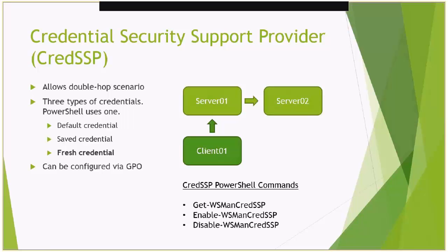The stipulation is that the script deployed to Server01 needs to access an authenticated network resource on Server02 — let's say a file server with a standard Windows share. If we didn't use CredSSP and just used a standard Kerberos connection, we'd successfully deploy the script from Client01 to Server01. But when that script ran on Server01 and tried to access the network resource on Server02 — the second hop — it would be an anonymous connection because we did not delegate access to our credential from Client01 to Server01.